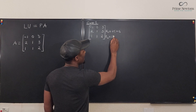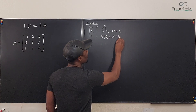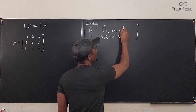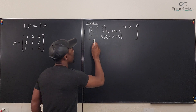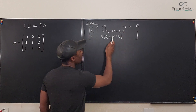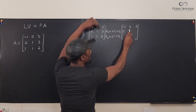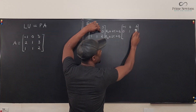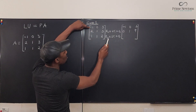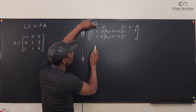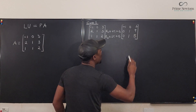I need one of this added to row three. I'm going to write the first row unchanged: minus one, zero, three. For the new row two, I write zero. Two of row one added to row two gives one; two of this added to this gives nine. For row three: one of row one added gives zero, one of this gives one, one of this gives five.